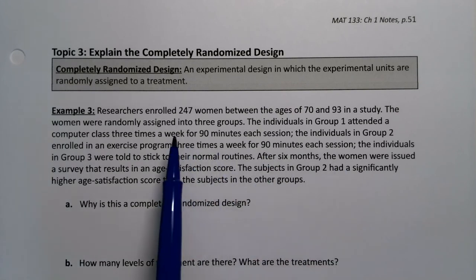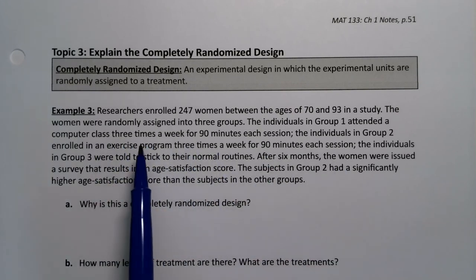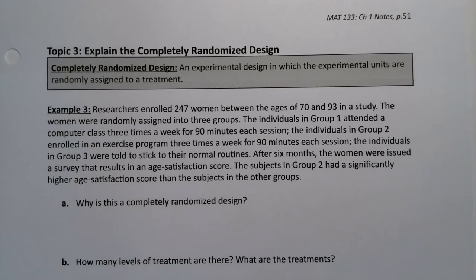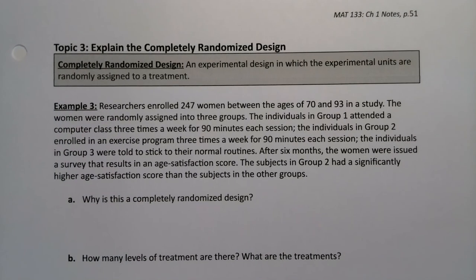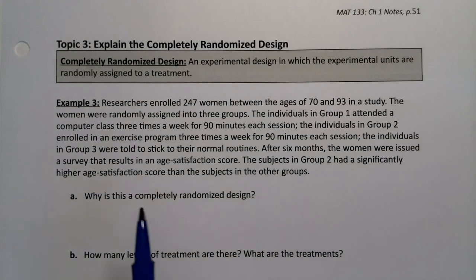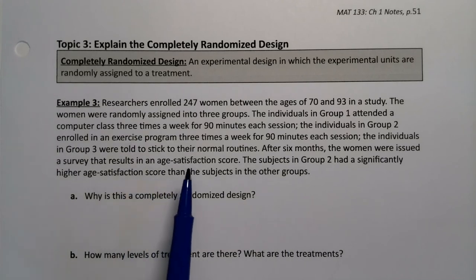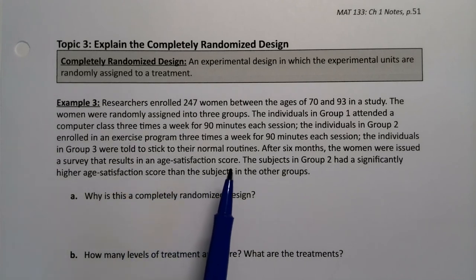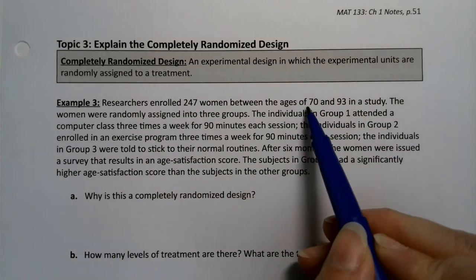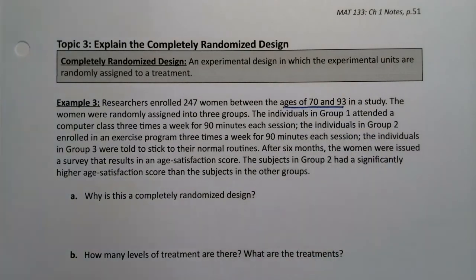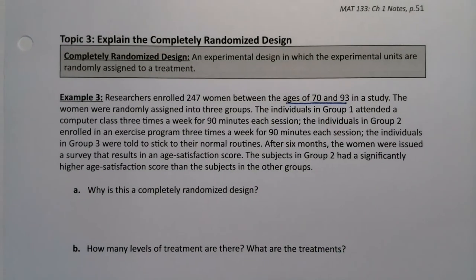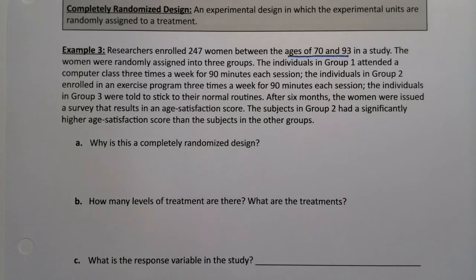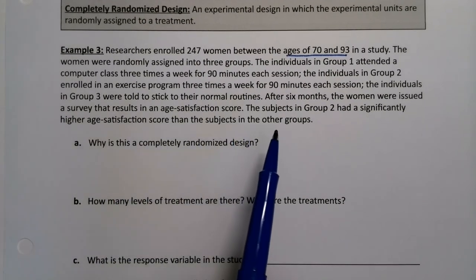So same amount of time, but different classes, one's computers, one's exercise. The individuals in group three were told to stick to their normal routines. After six months, the women were issued a survey that results in the age satisfaction score. So how satisfied are you with life essentially? And you'll notice these are elderly ladies. The subjects in group two has significantly higher age satisfaction score than the subjects in the other groups.